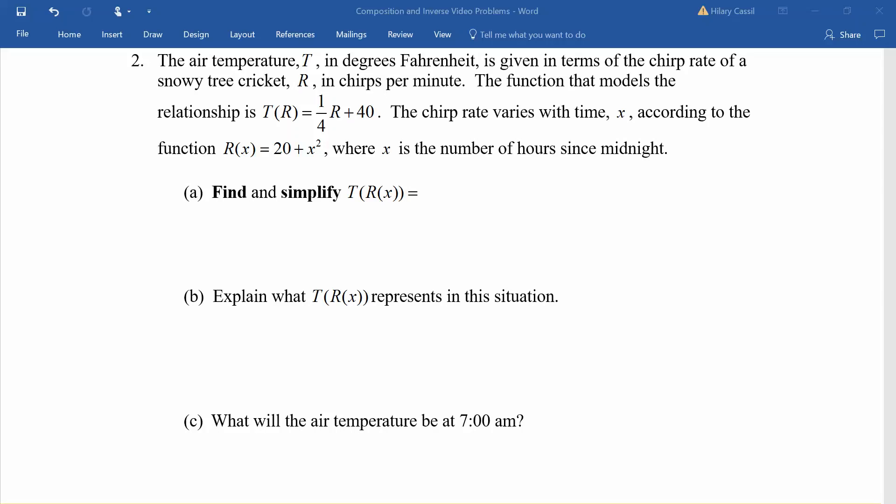Here's our real situation. The temperature T in degrees Fahrenheit is given in terms of the chirp rate of a tree cricket. The chirp rate R is in chirps per minute. The function that models this relationship is T equals one-fourth R plus 40. The chirp rate varies with time, where x represents the number of hours since midnight, and that relationship is given by R of x equals 20 plus x squared.